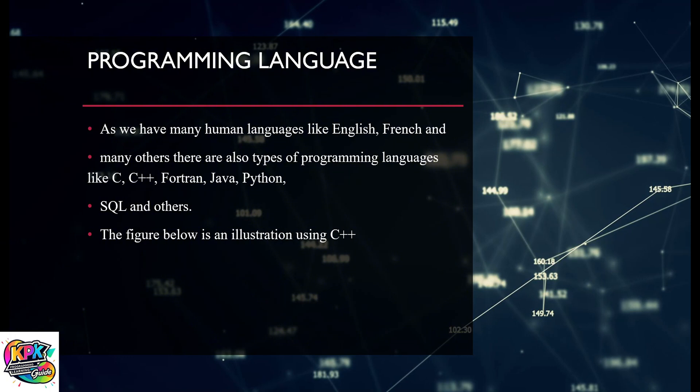So programming languages: as we have many human languages like English, French and many others, there are also types of programming languages. Examples of these languages are C, C++, Fortran, Java, Python, SQL and others.